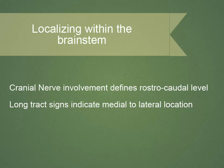The clinical pearl of this talk is contained in this slide, which indicates that in order to localize a lesion within the brainstem, you can first define which cranial nerves are involved in order to place the lesion at its rostral-caudal level — midbrain, pons, or medulla — and then use the long tract signs involved to indicate which part, going from medially to laterally, is involved. These two rules will enable you to localize the lesion within millimeters.